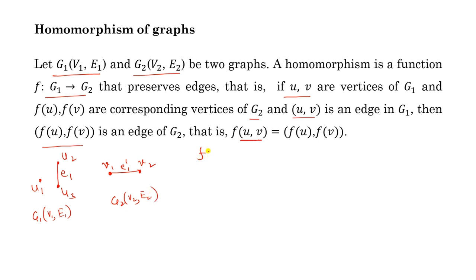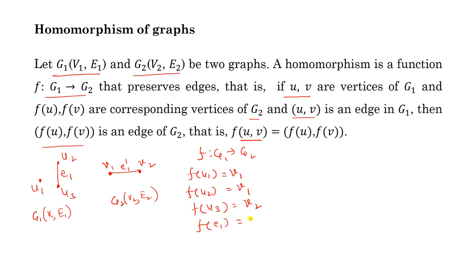Now define a mapping f from g1 to g2 as follows: f(u1) = v1, f(u2) = v1, f(u3) = v2, and f(e1) = e1 dash. So the function f is defined for these vertices and edges. Now we have to check whether this is a homomorphism or not.